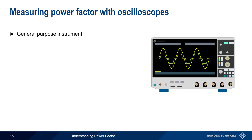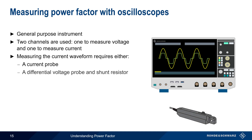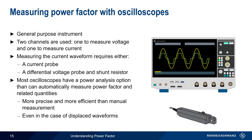Oscilloscopes are more general-purpose instruments that can also be used to measure power factor and the effectiveness of power factor correction. Two channels are needed in this case — one to measure the voltage waveform and one to measure the current waveform. Note that in order to measure current with an oscilloscope, either a current probe or a differential voltage probe and shunt resistor must be used. Many oscilloscopes have a power analysis option that will automatically measure power factor and related quantities. Using a power analysis application is significantly more precise and efficient compared to manual measurement, even in the case of a simple waveform displacement.